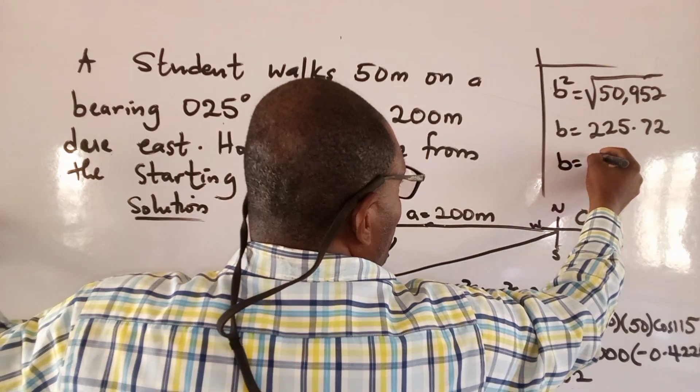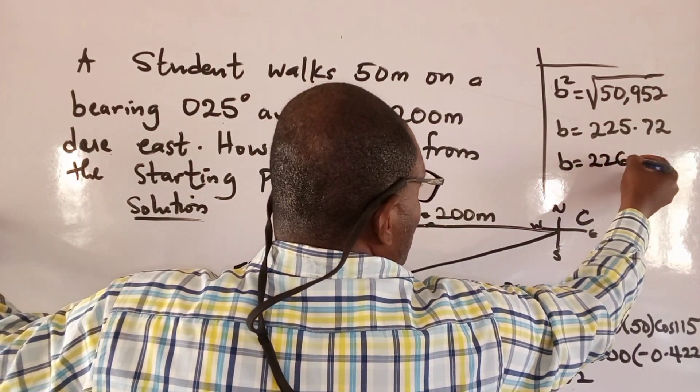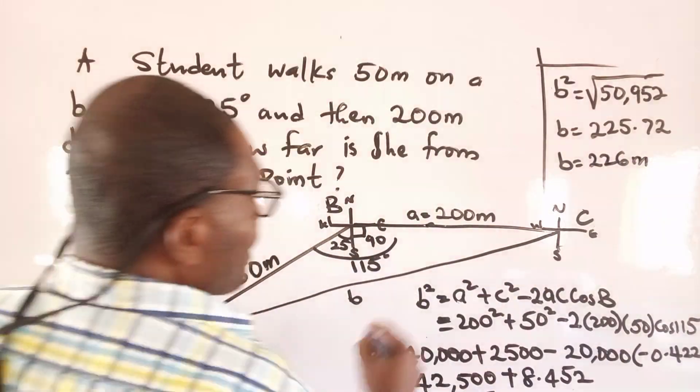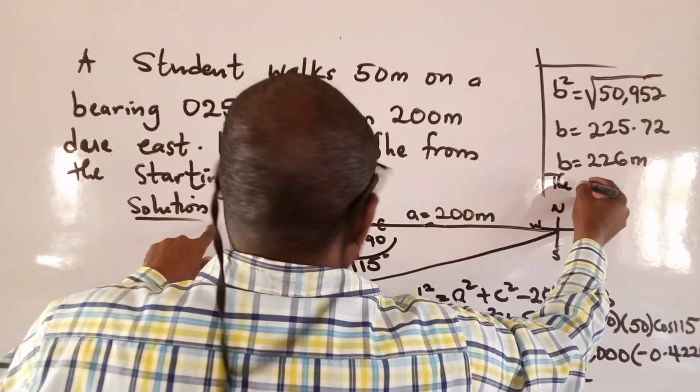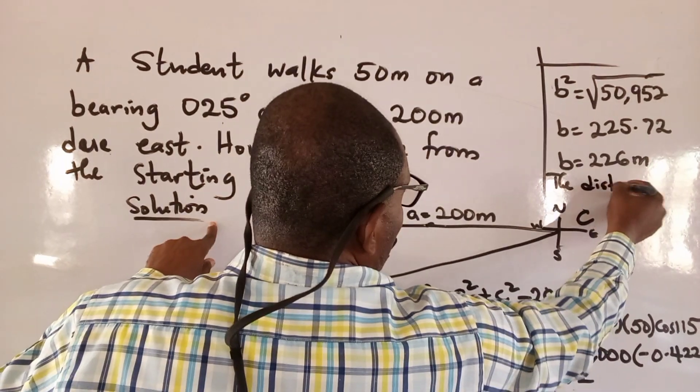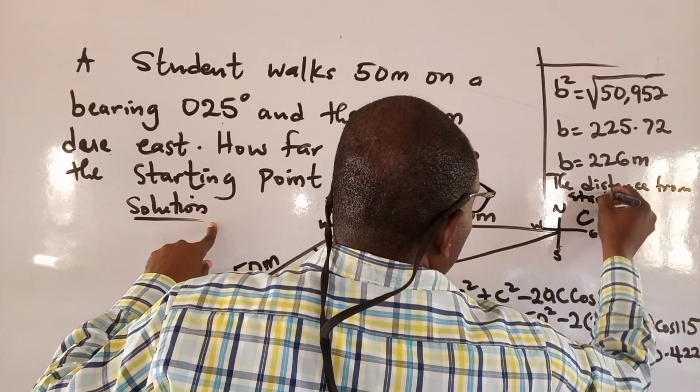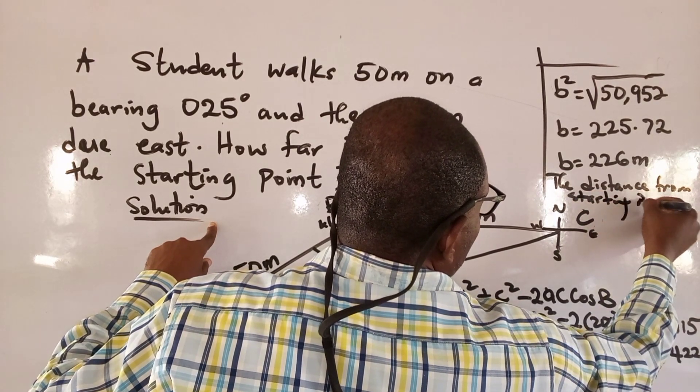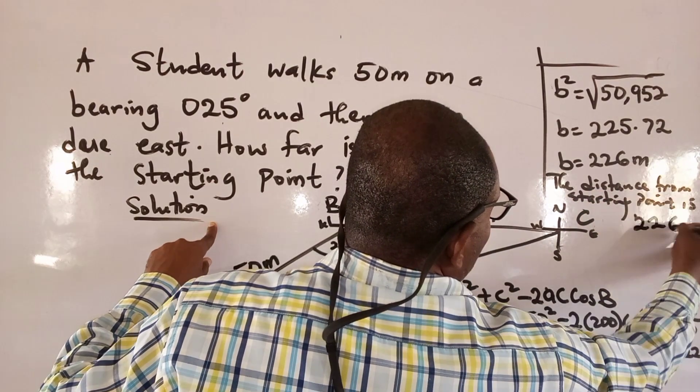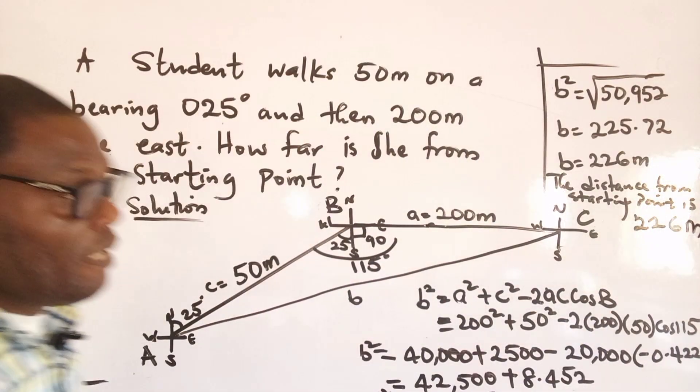So the distance from the starting point is 226 meters.